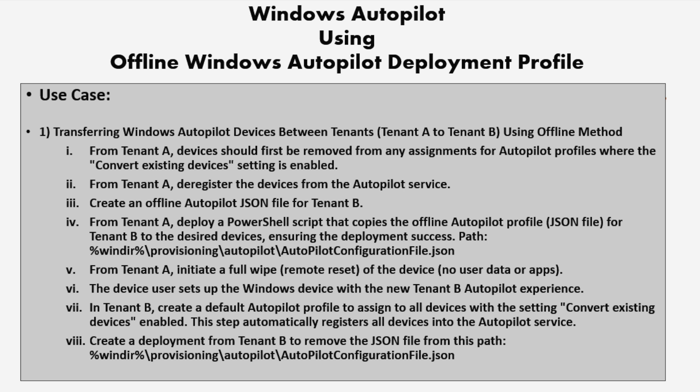However, there are certain scenarios or use cases where this approach is not feasible, such as transferring Windows Autopilot devices between tenants using an offline method. In that process, we have to perform several steps. The very first step from tenant A is that a device should first be removed from any assignments for an Autopilot profile where the convert existing device setting is enabled.